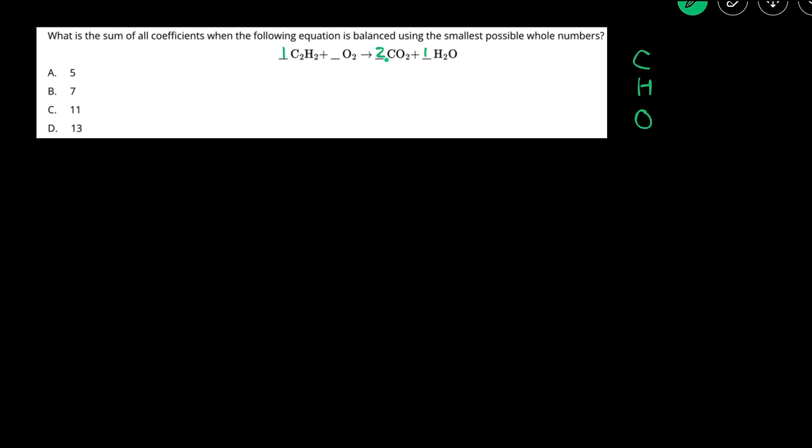And then lastly balancing the oxygens. There's two times two, so there's four oxygens here, and then one times one, so one here. So in total there's five oxygens on the right, so we need five oxygens on the left. We have to find a number that multiplied by two gives five. So this is where we can use a fraction like five over two.